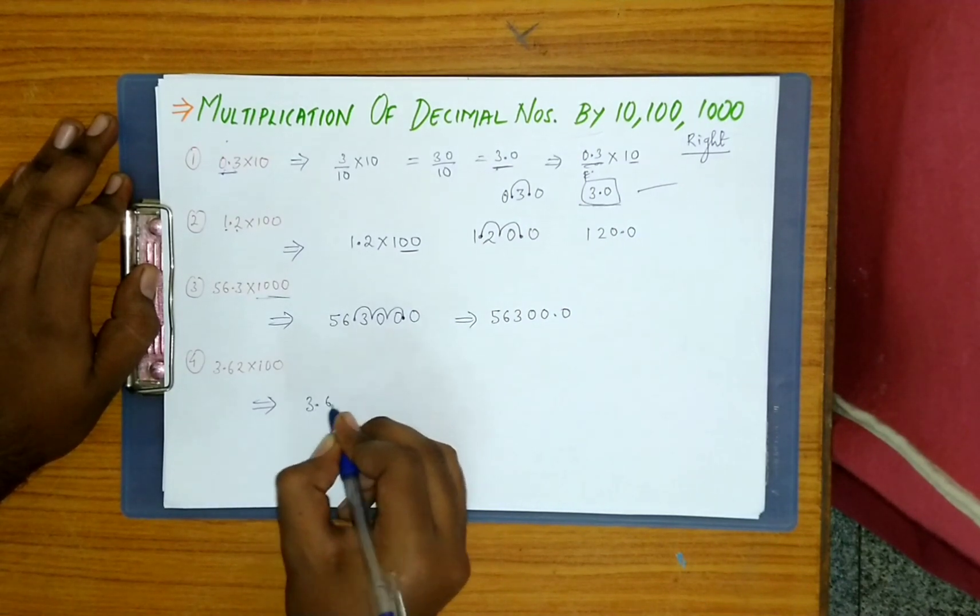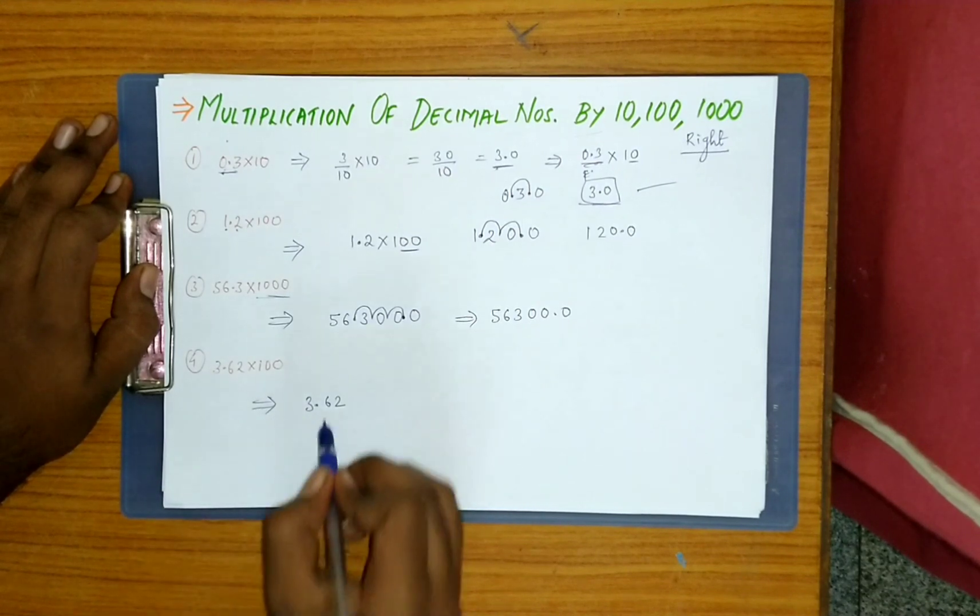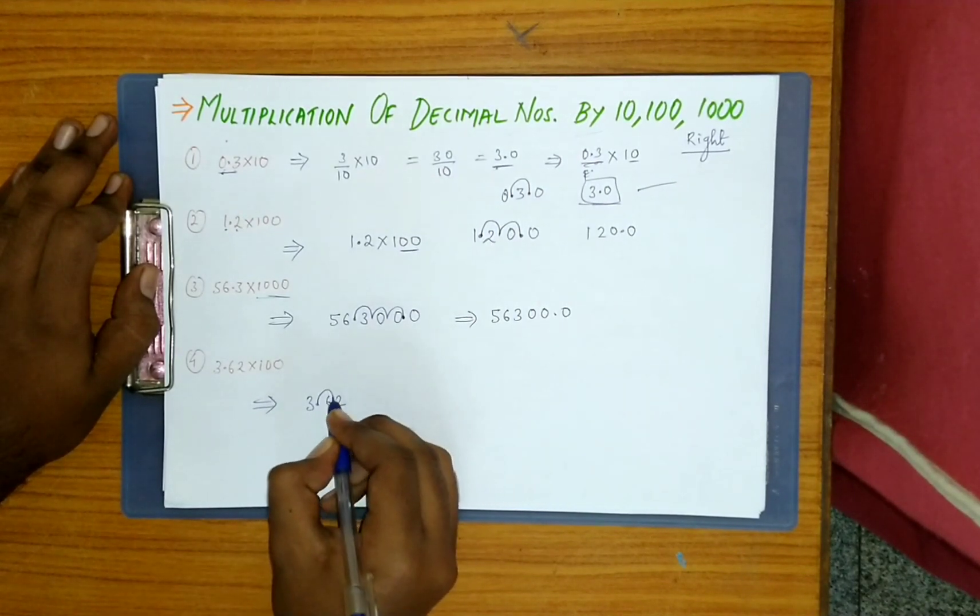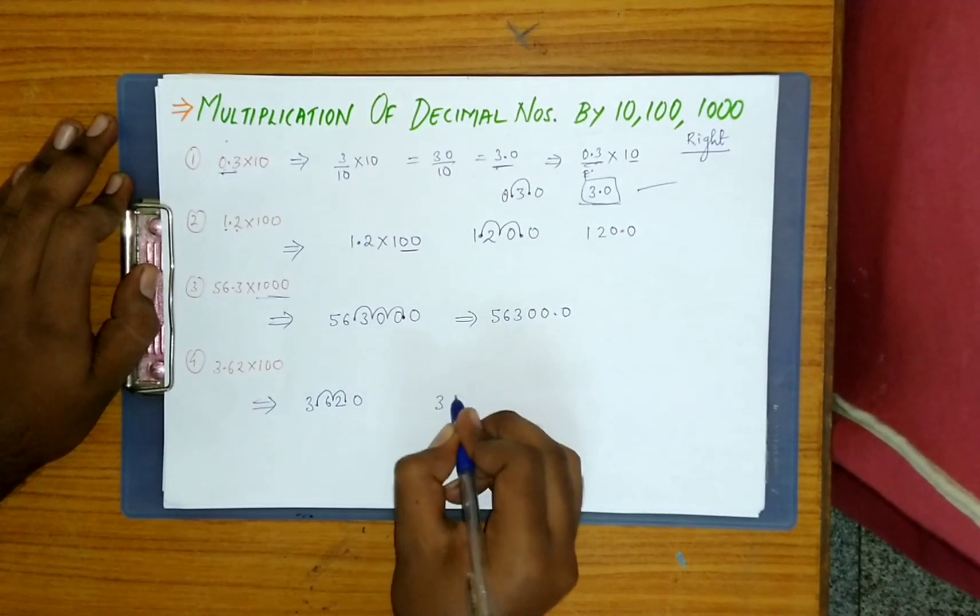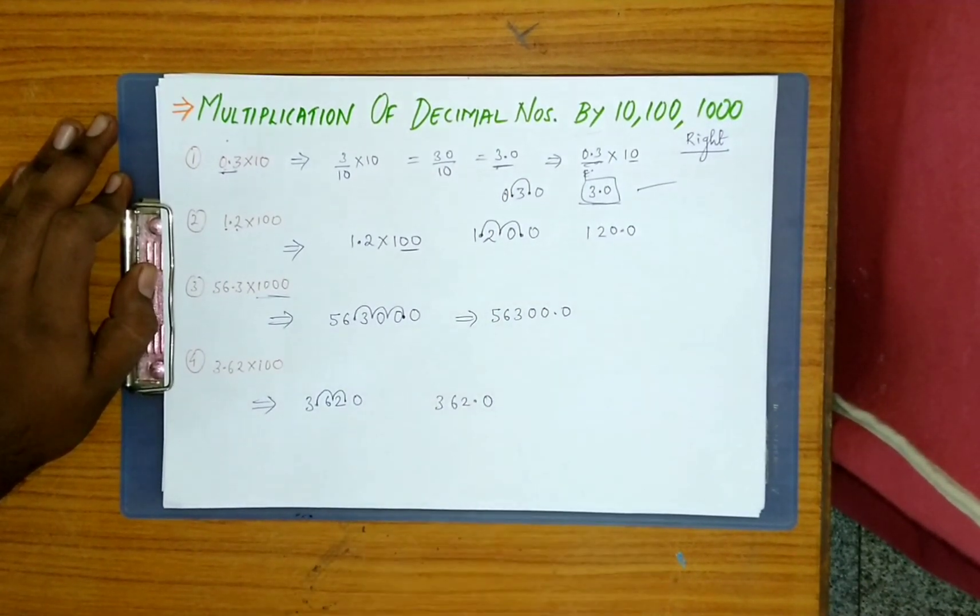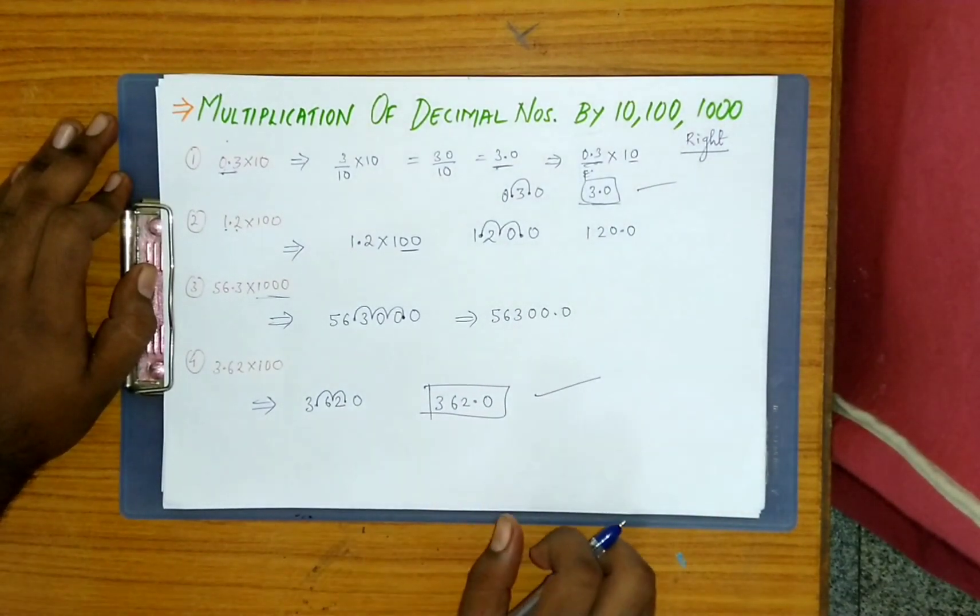3.62 multiply with 100. Two zeros, so jump two times: one, two. Reaches here, put one zero. Answer will be 362.0. In just one step you can finish this answer.